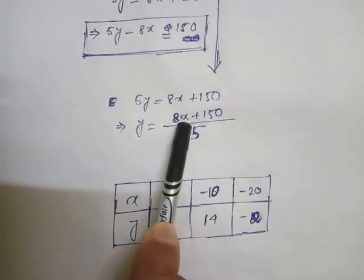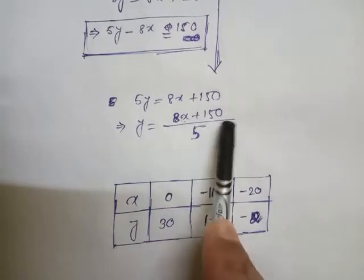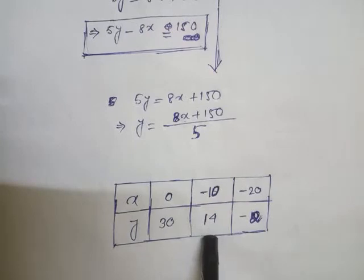Next one, it's given minus 10. 8 times minus 10 is minus 80. Minus 80 plus 150 is 70. 70 by 5 is 14.